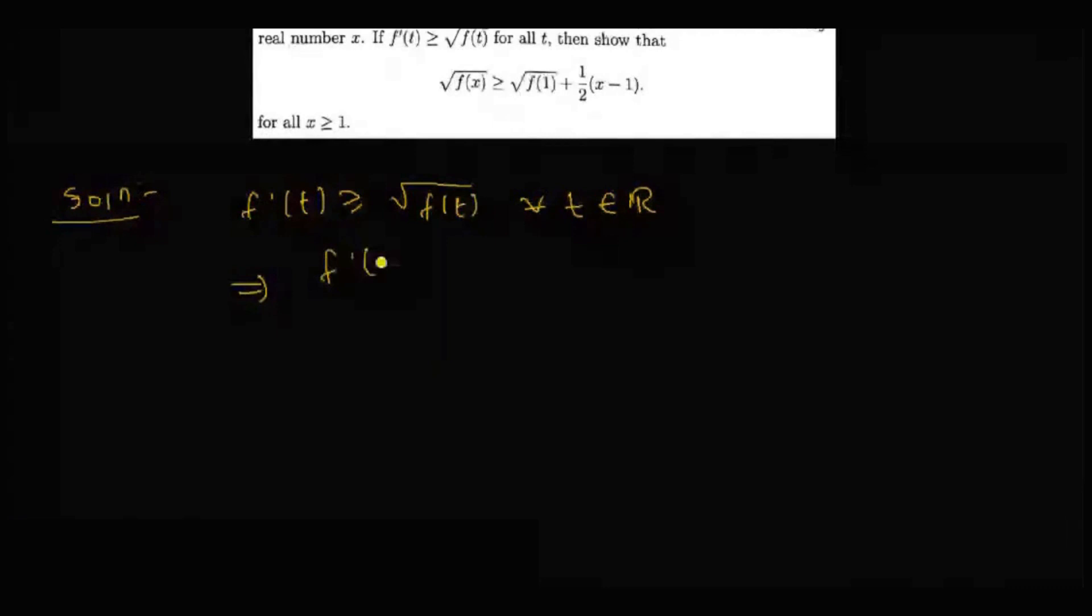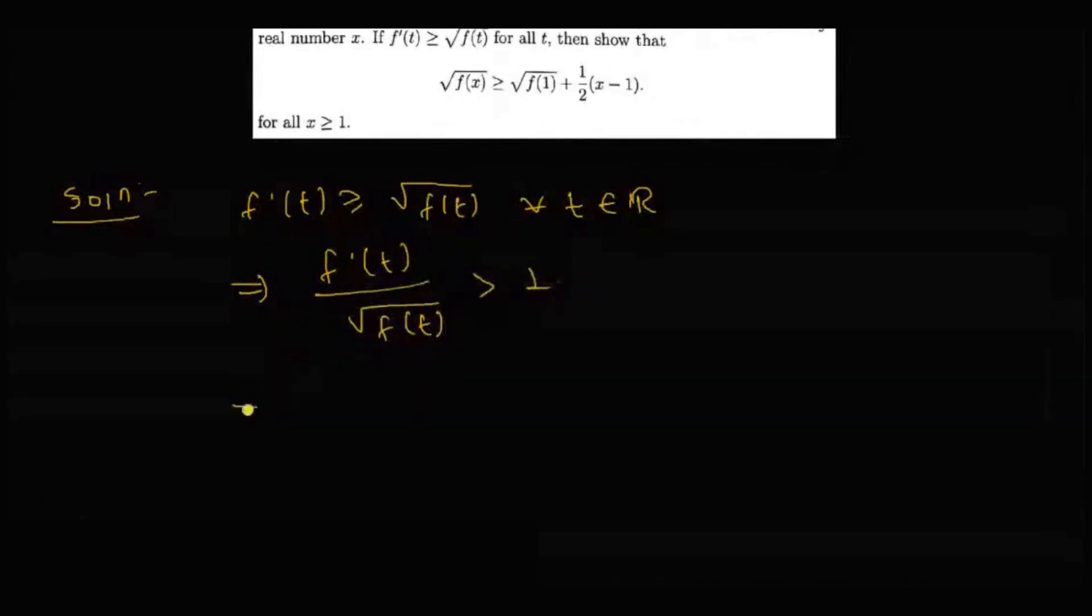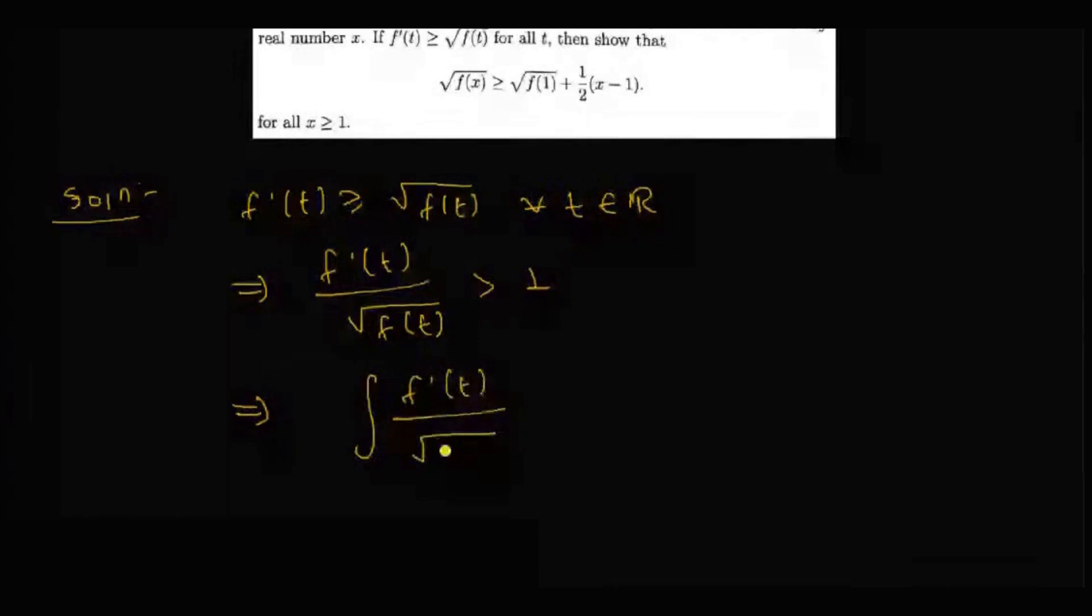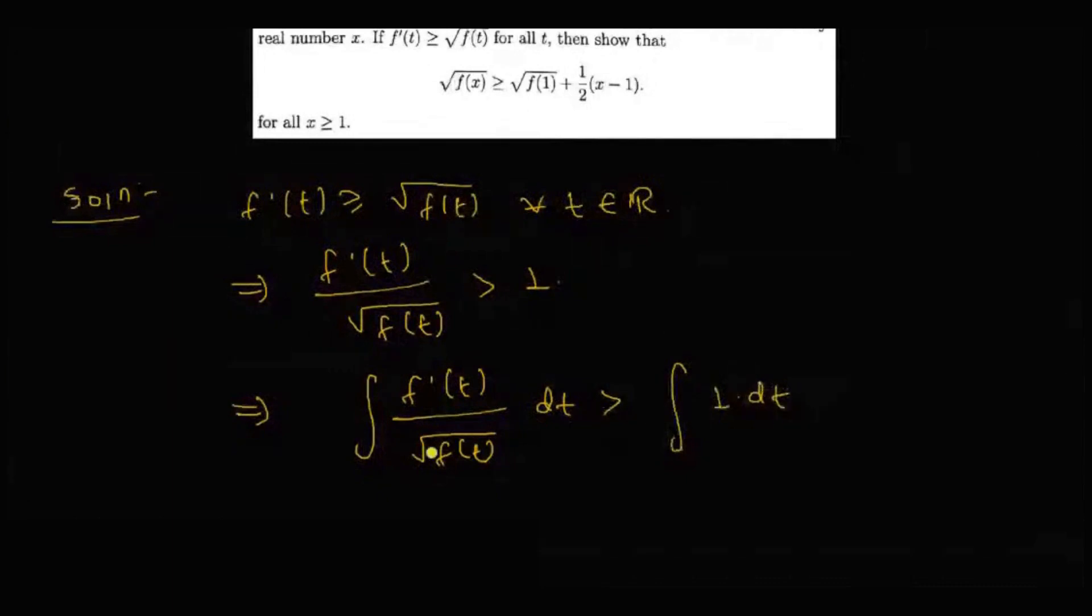Now we can divide this by square root of F T as this is a positive number, which gives F dash T over square root F T is greater than 1 for all T belongs to real numbers. Now we integrate this thing. F dash T by square root of F T DT is greater than integral of 1 times DT.